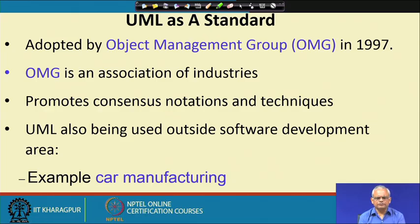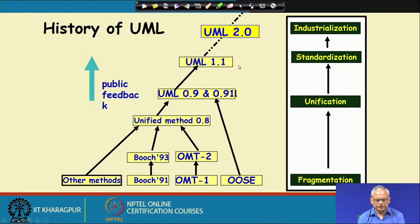Once it was adopted by the OMG, UML became extremely popular and is used extensively not only in software development but also in domains entirely different from software. UML version 1.0 was released in 1997. There was fragmentation of different methodologies in the 80s and 90s, and towards the end of the 90s these were unified into the Unified Modeling Language.